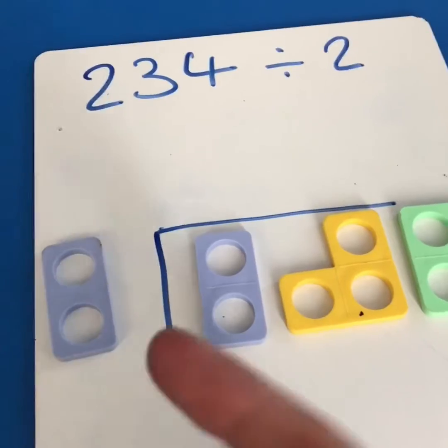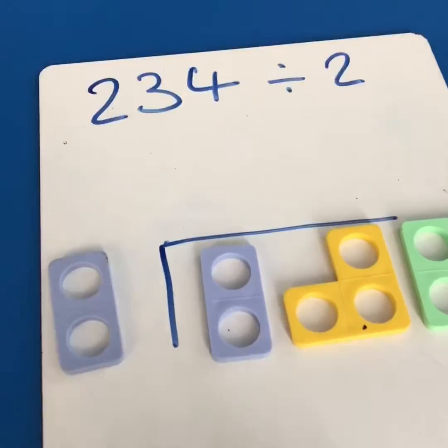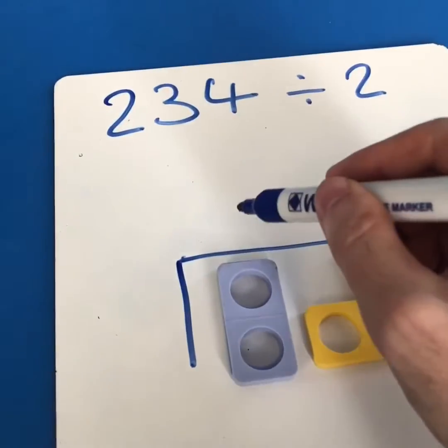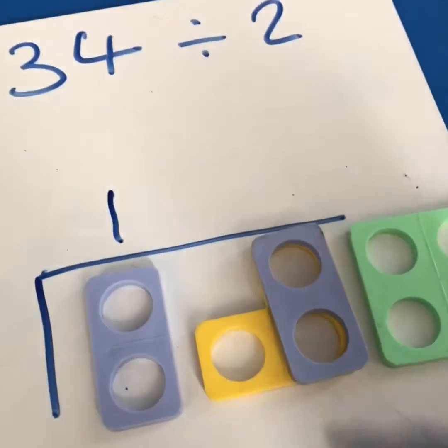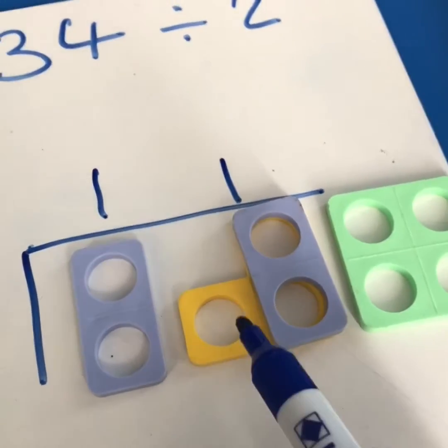Now this is great because kids can actually understand how many times a number goes into another one. So two goes into two once, two fits into three once but there's a remainder of one.